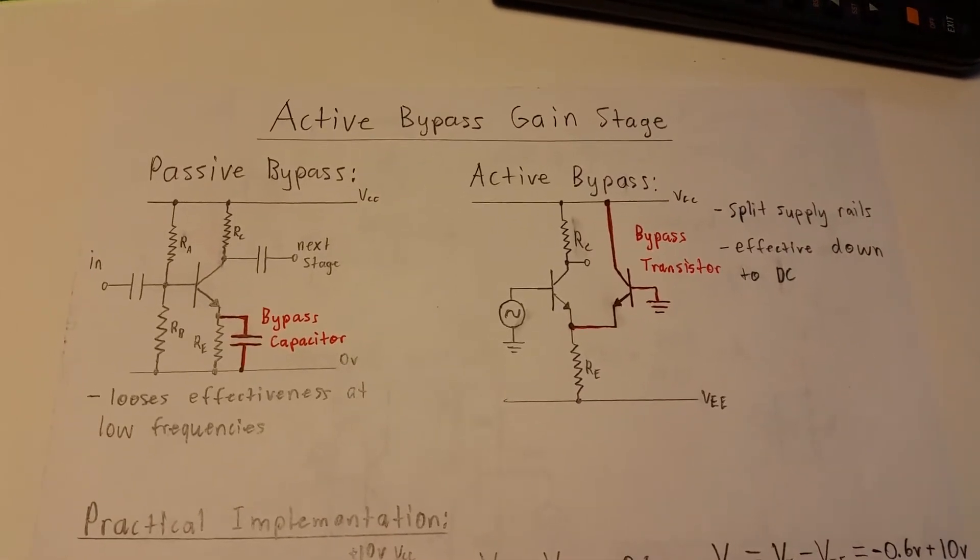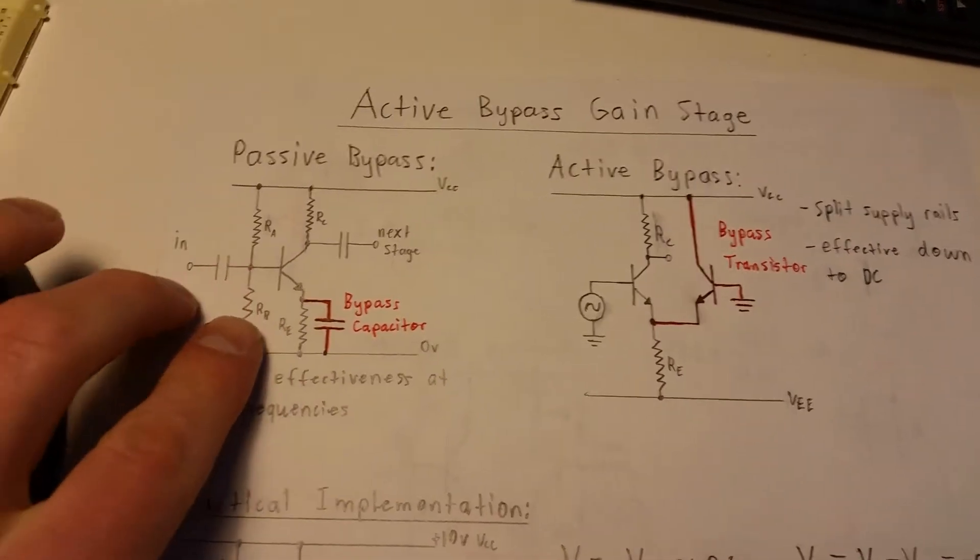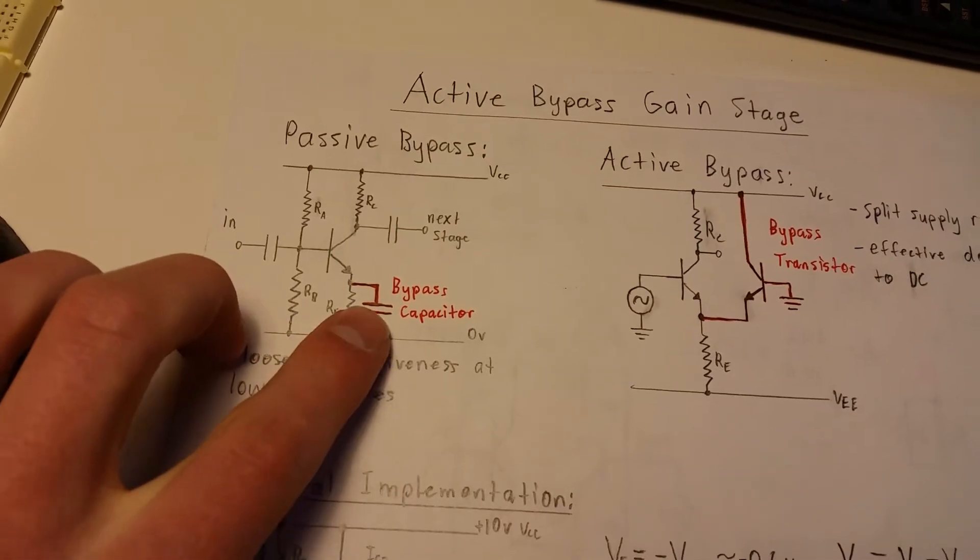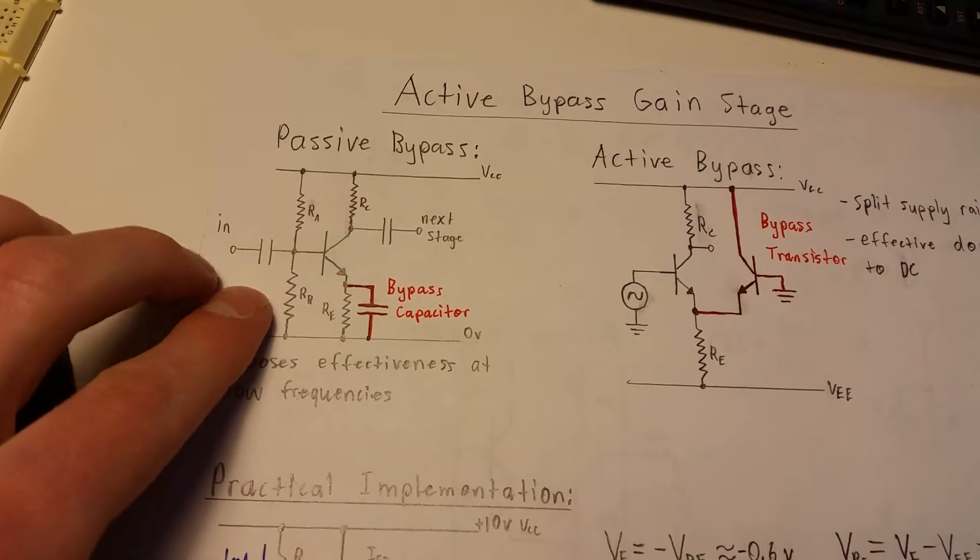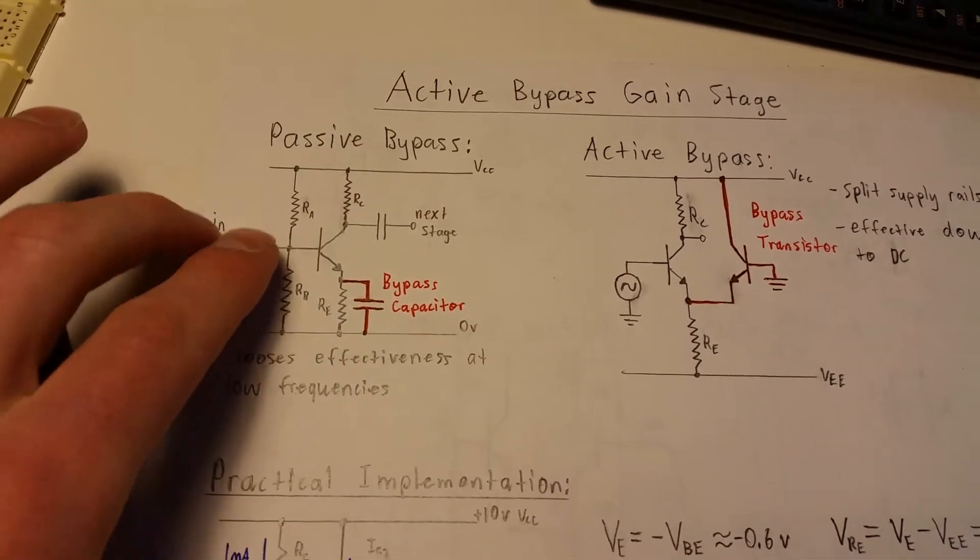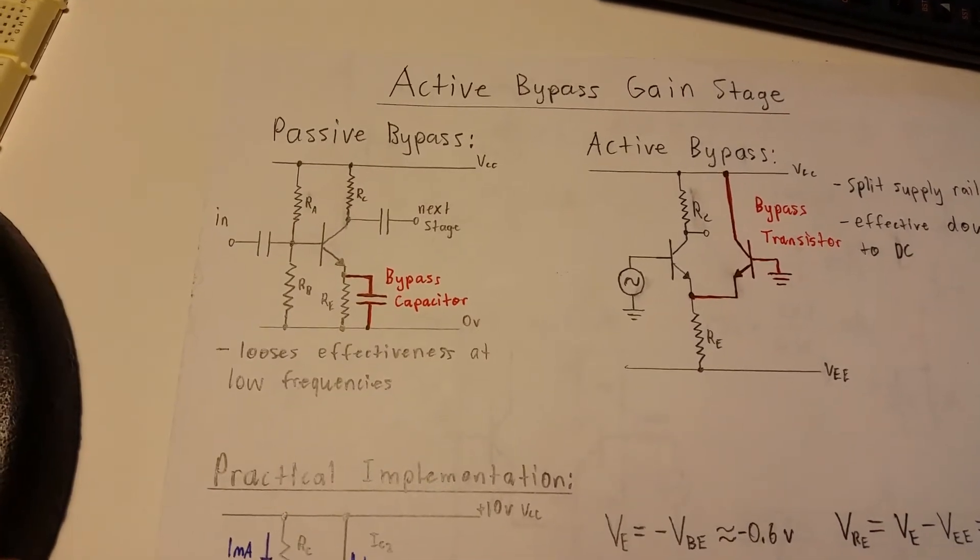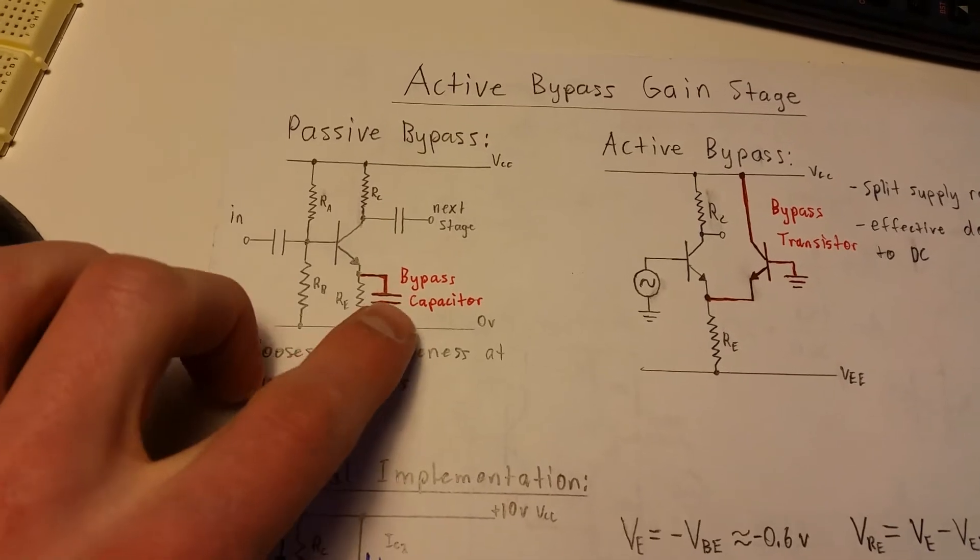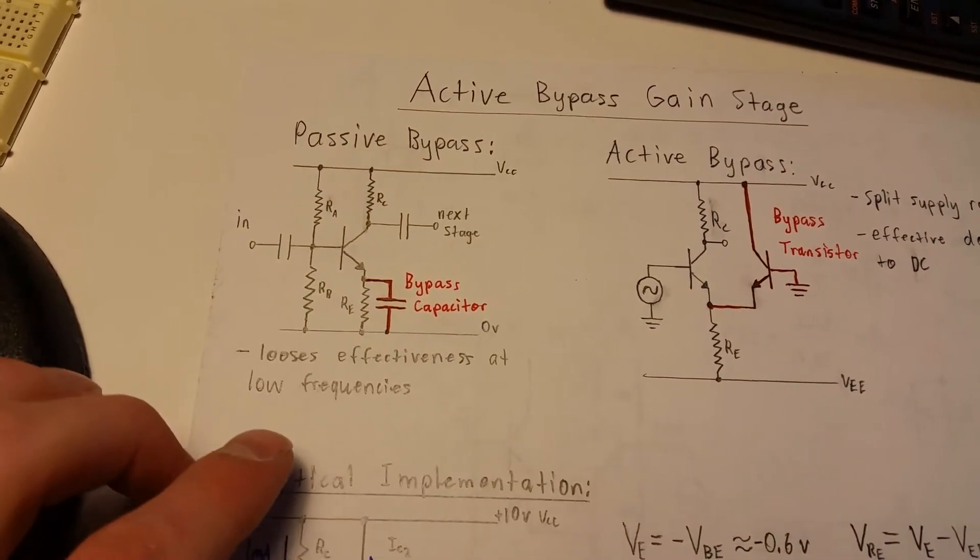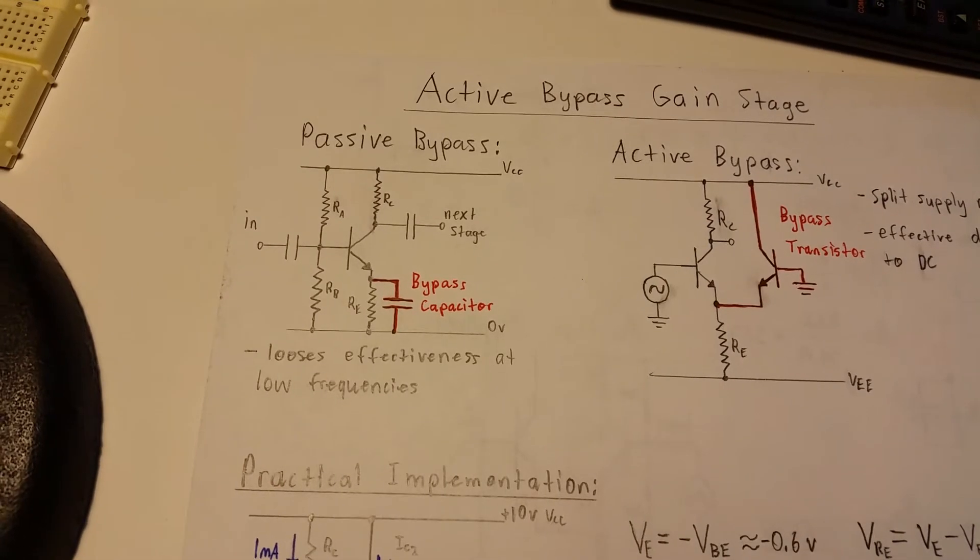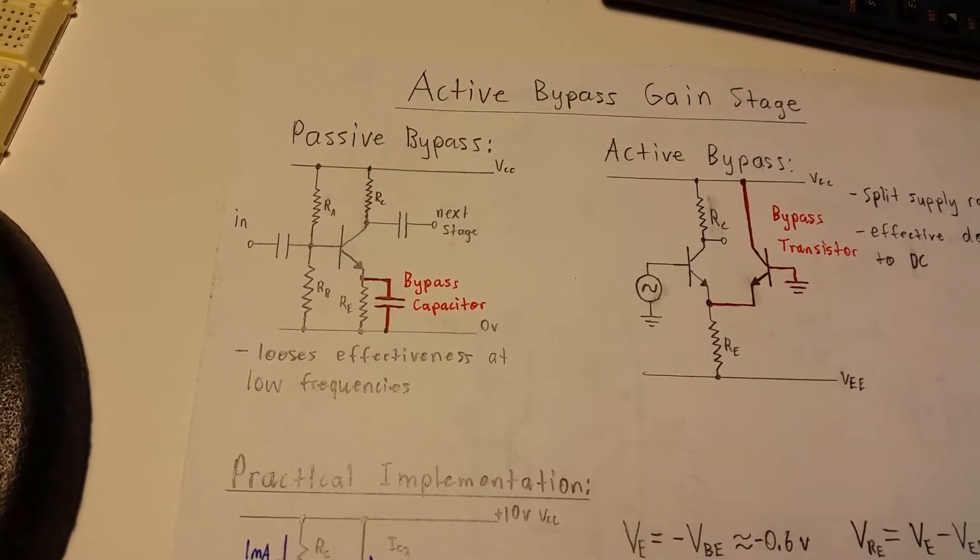Alright, here's something interesting. Bypassing the emitter degeneration resistor in a feedback configuration, or what some call the feedback configuration of a common emitter amplifier. This is the traditional way of doing it, where you've got a capacitor and it boosts your gain, but it's not very good at low frequencies.